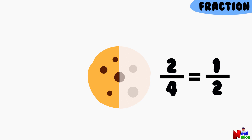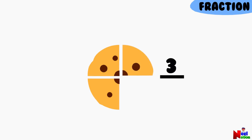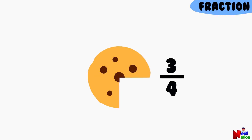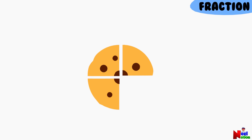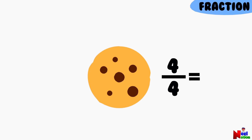So, when you have three quarters, it's three fourths of the cookie. Similarly, four out of four pieces is equal to one whole cookie.